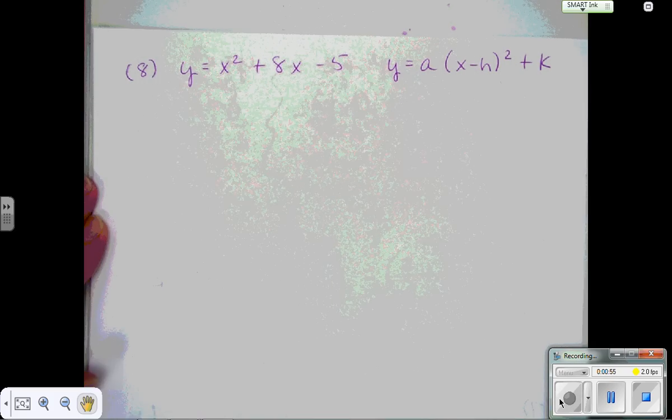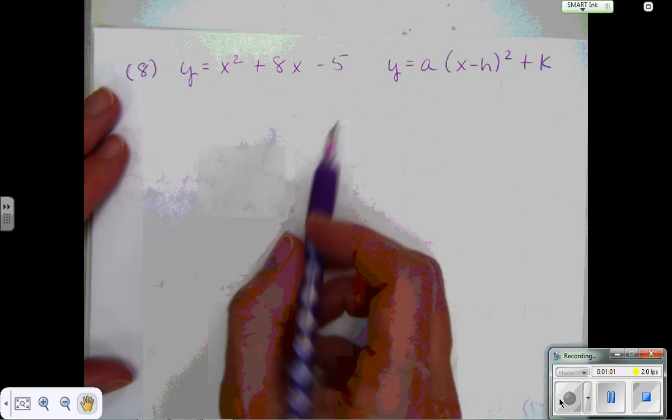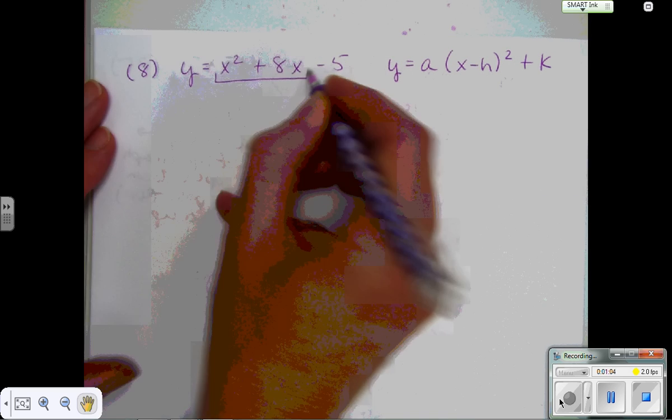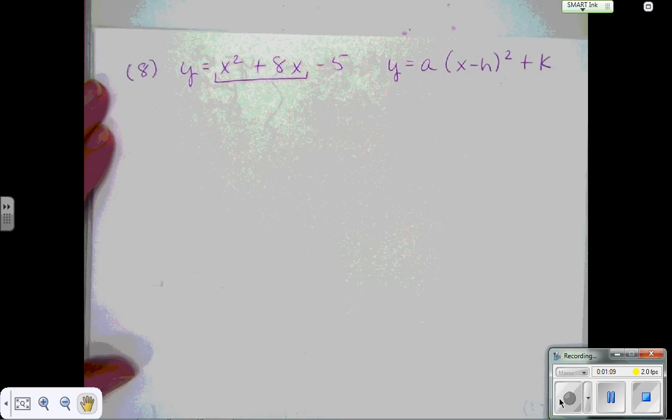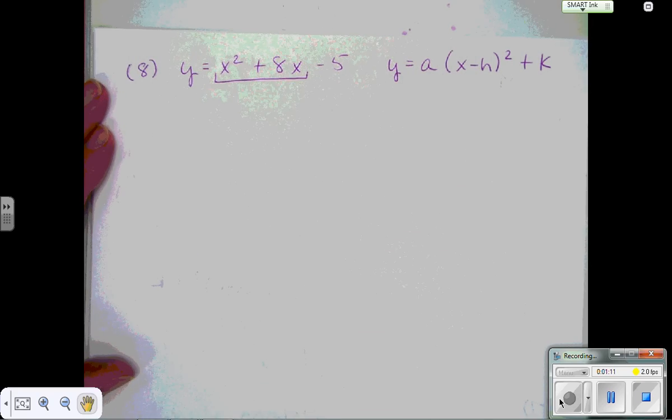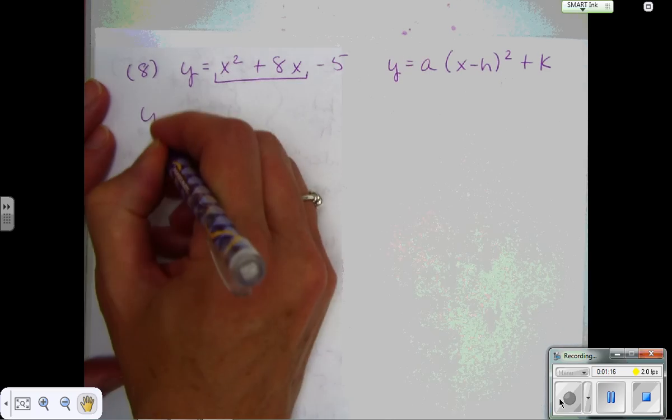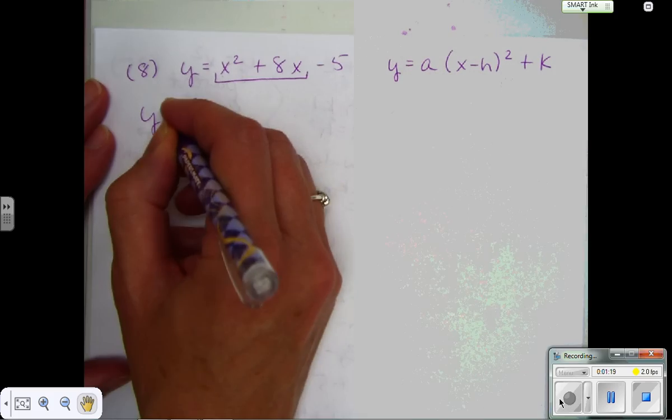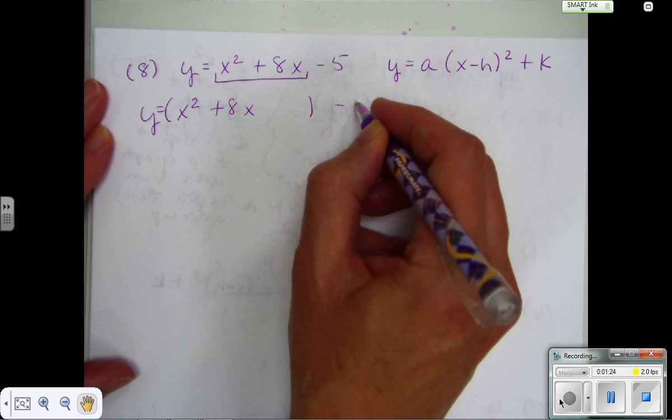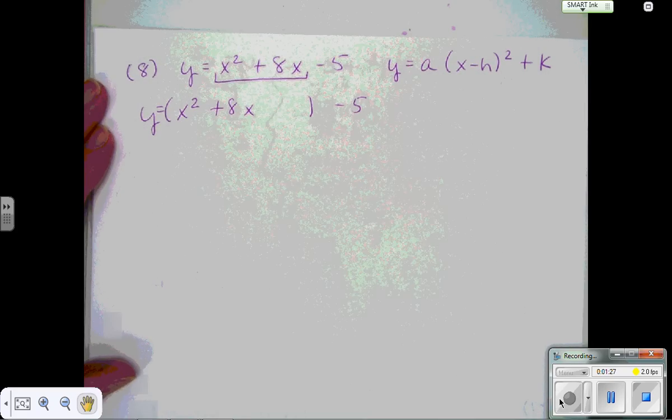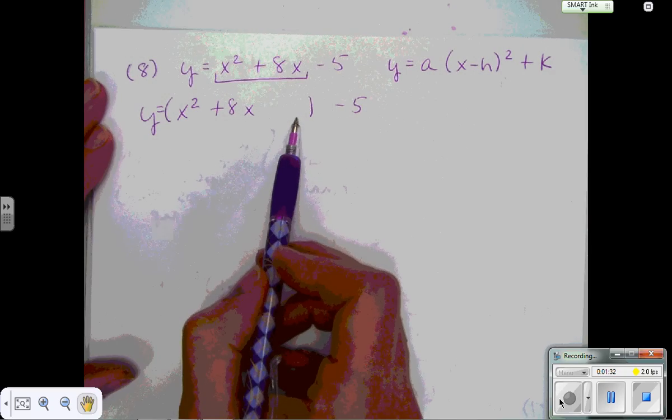So the first thing you want to do is get this into vertex form. Right now this is standard form. We are going to group the x squared and the x together. We're going to leave the constant value out. We're going to shun the constant value. So it's just the quadratic and the linear term. So for those two terms, I'm going to complete the square. I'm going to put those in parentheses, group them together, and put that negative 5 outside the parentheses. And I left some space here so I can write down my number that's going to complete the square.